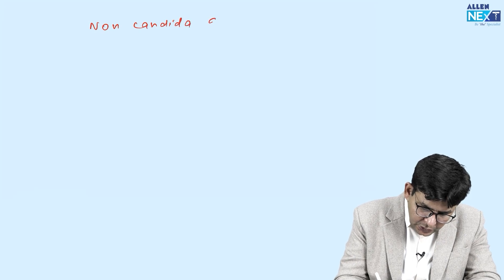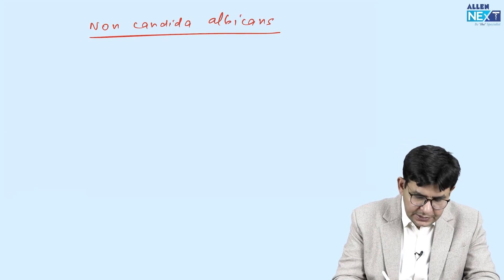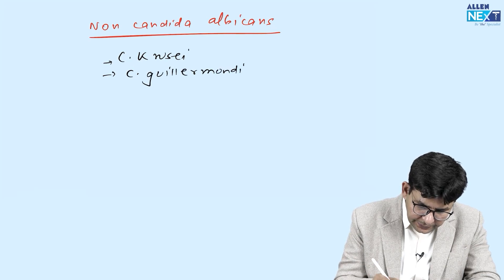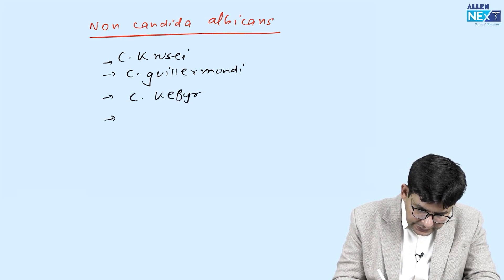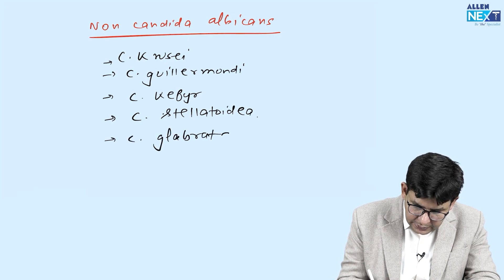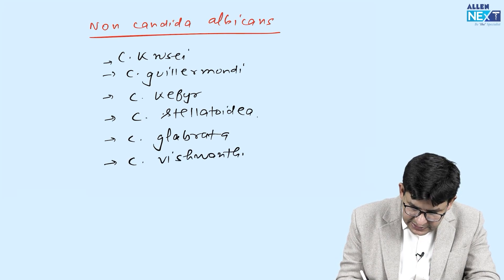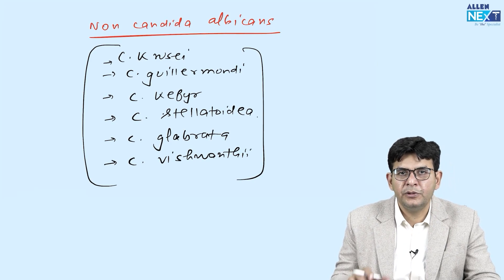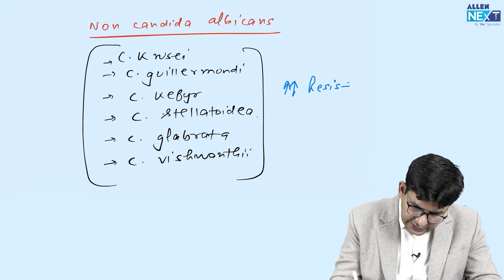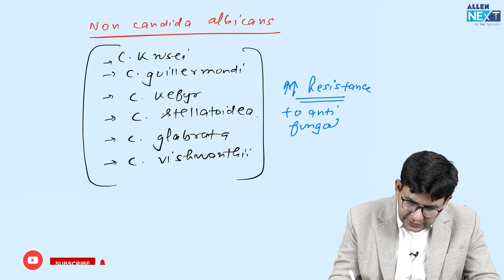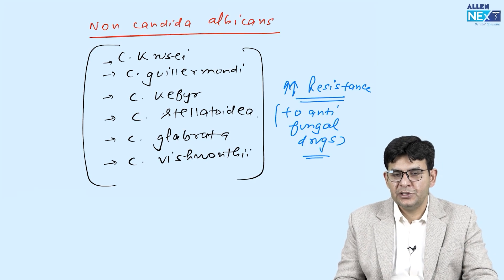Besides Candida albicans, there are non-Candida albicans species, also termed NCA. These include Candida krusei, Candida guillermondii, Candida kefyr, Candida stellatoidea, Candida glabrata, and Candida vishwanathii. There is an increasing resistance among these non-Candida albicans species to antifungal drugs day by day.